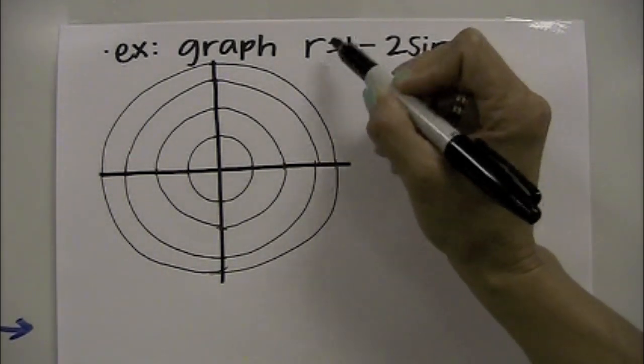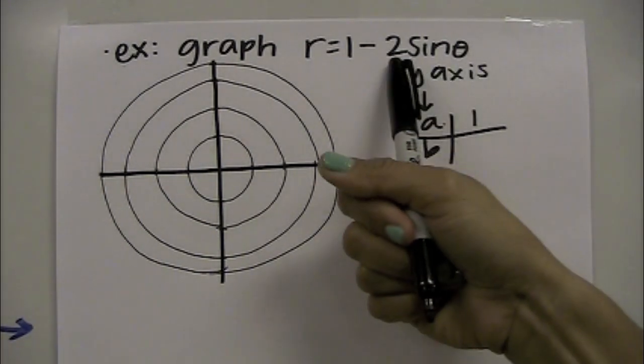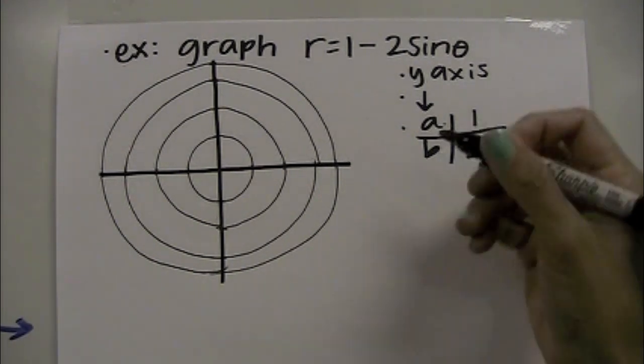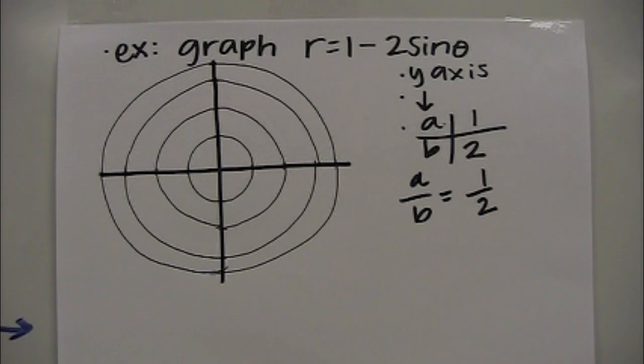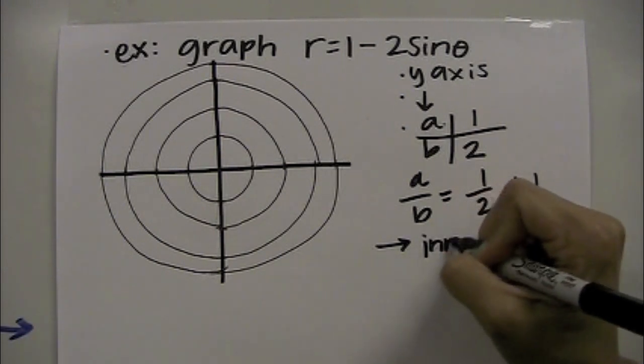And then I want to look at my a and b. A is 1, b is 2. So if I look at that ratio, a over b, it equals 1 half. If you refer to the chart we just created, that value is less than 1, indicating this graph will have an inner loop.